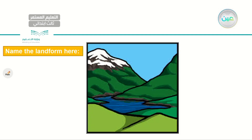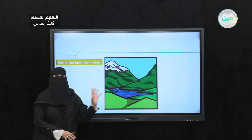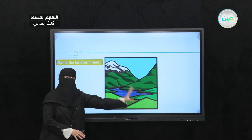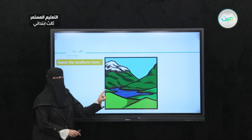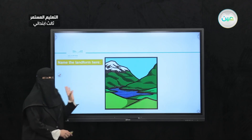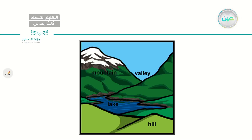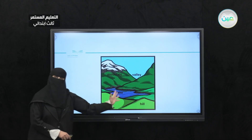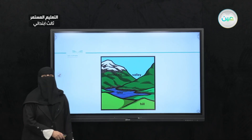Now I have this picture with no names on it. Notice that there are different landforms here — try to name as many as you can see. Let's reveal the answers: I have mountains, valley, lake, and hill. Let's read: mountains, valley, lake, and hill.